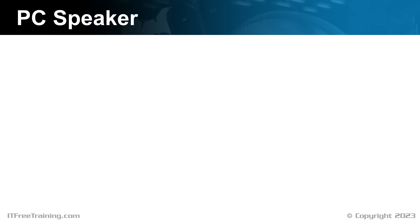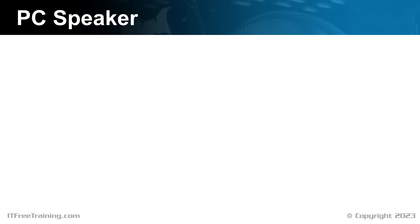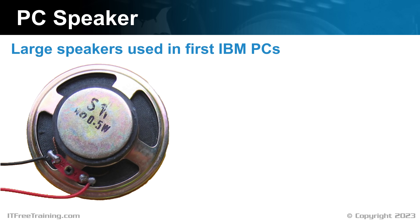To start with, let's do a quick history lesson. The first IBM computer shipped with a large speaker called the PC Speaker. The speaker was used to provide sound for the computer. This included beeps to indicate a hardware fault, but also sound for applications, including music.